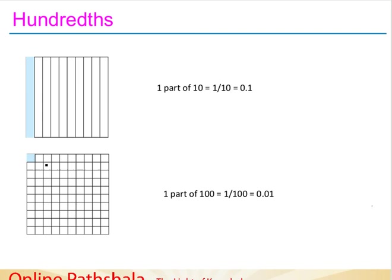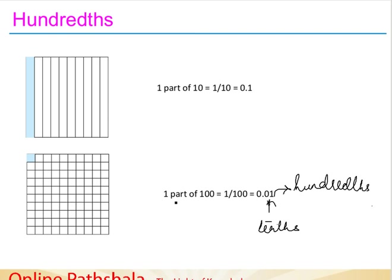Similarly, if I take a square and divide it into ten equal parts, and then divide each part again into ten equal parts, I am taking one part of a hundred. We represent that as one by hundred in fractions. To represent that in decimals, I put one more zero — this zero represents the tenths place, and the one represents the hundredths place. So one part of hundred is written as zero point zero one.